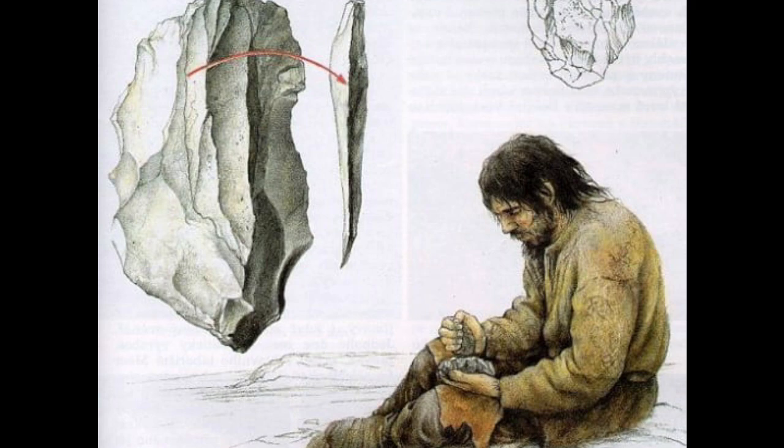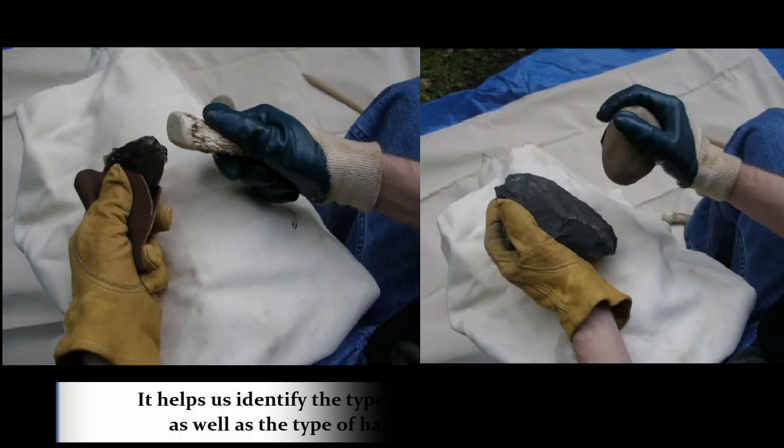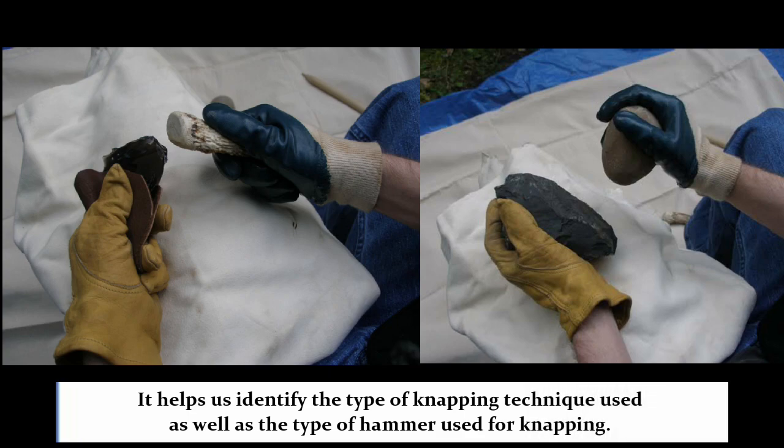Along with this, the position of the point of percussion and the angle of the strike or strike angle can help us to calculate the force or the pressure applied to the stone tool. Not only this, the removal of the flakes can also tell us about the type of material that was used as the hammer.